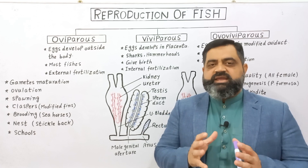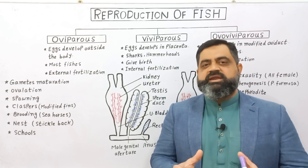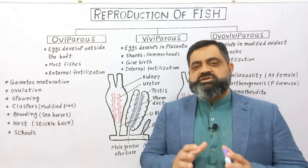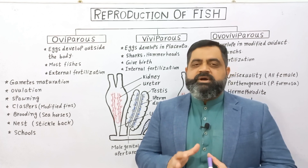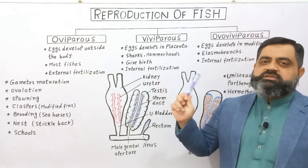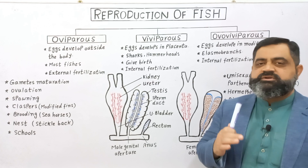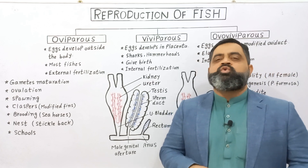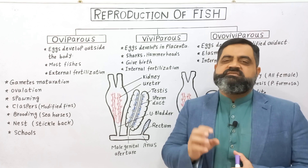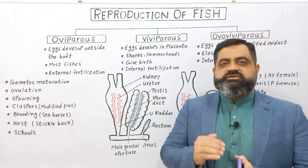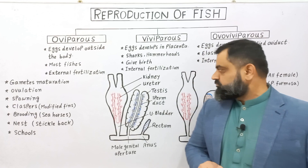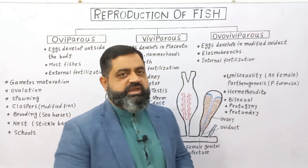If fertilization is external, it is very necessary that eggs and sperms are released at the same time so that maximum chances of fertilization can take place. But in internal fertilization, eggs are retained inside the body while sperms are transferred to the female body with the help of modified fins of the male, which have specialized grooves to transfer sperms into the body of the female fish.